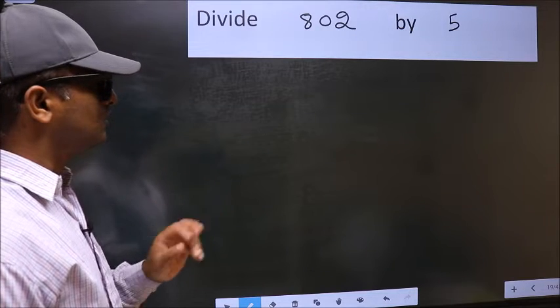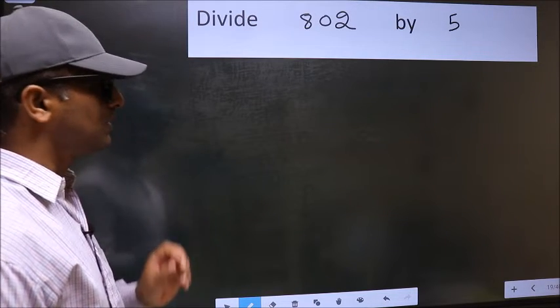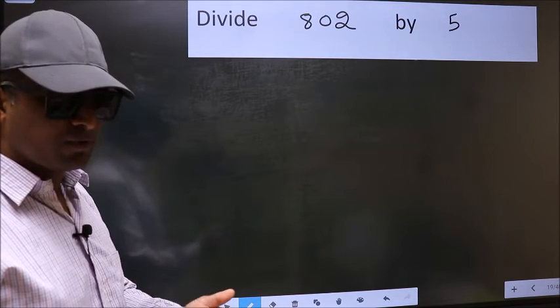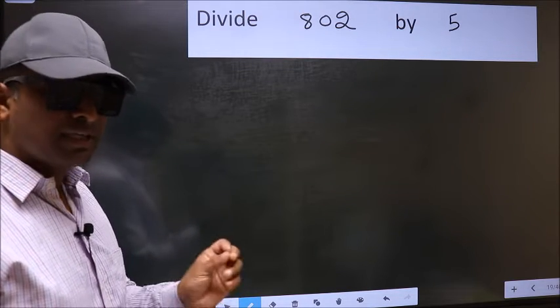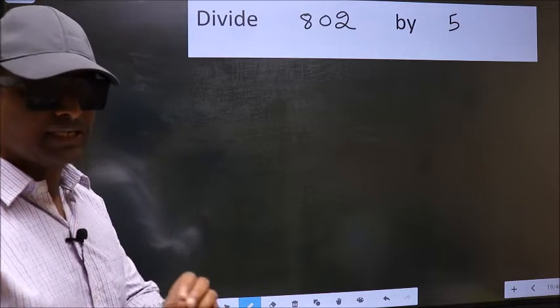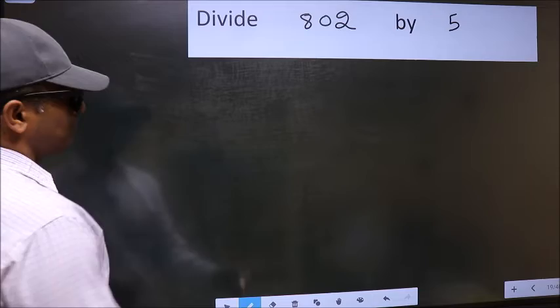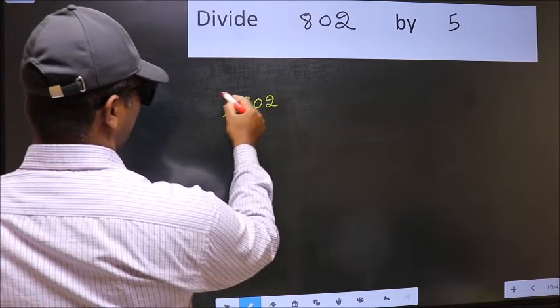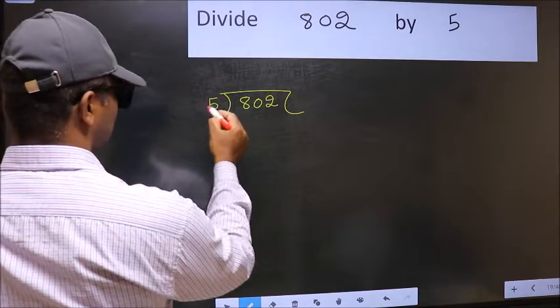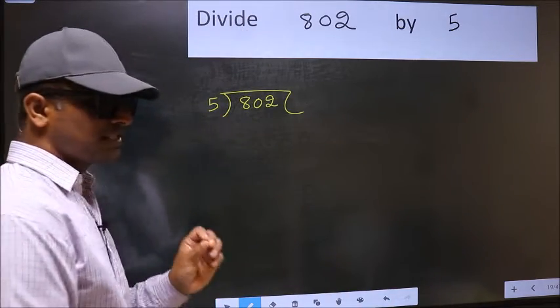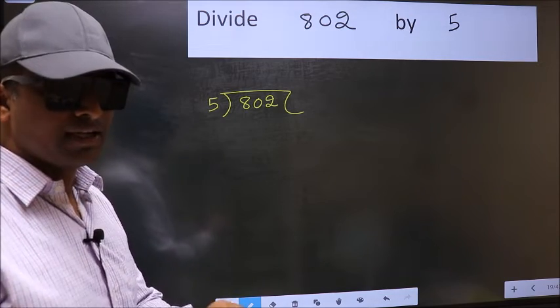Divide 802 by 5. While doing this division, many do this mistake. What is the mistake that they do? I will let you know. But before that, we should frame it in this way. 802 and 5 here. This is your step 1.